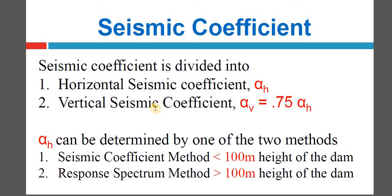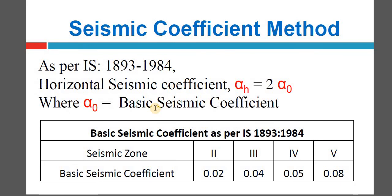Alpha-h can be determined by one of two methods: seismic coefficient method — if the height of the dam is less than 100 meters; or response spectrum method — if the height of the dam is greater than 100 meters. For the seismic coefficient method, horizontal seismic coefficient α_h = 2 × α₀, where α₀ is the basic seismic coefficient. As per IS 1893:1984, for seismic zones 2, 3, 4, and 5, the basic seismic coefficient α₀ values are 0.02, 0.04, 0.05, and 0.08 respectively. Using the formula α_v = 0.75 × α_h, you can find the vertical seismic coefficient.